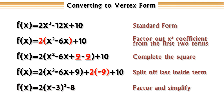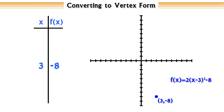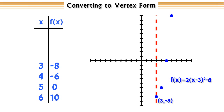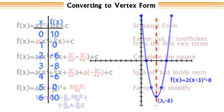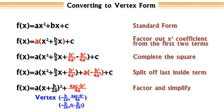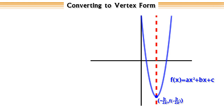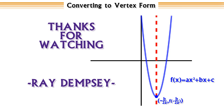Now that we've converted it to vertex form, we can easily see that the vertex is located at (3, -8). This is when the axis of symmetry can come in handy for graphing. We can compute the functional values of points on one side of the axis of symmetry, and since the parabola is reflected over this line, we can plot those points without further computation. Converting the general quadratic function into vertex form by completing the square, we see the vertex is located at (-b/2a, f(-b/2a)). Hopefully this can get you rolling in your quest to graph quadratic functions. This is Ray Dempsey reminding you that math is simple — well, once you get it.